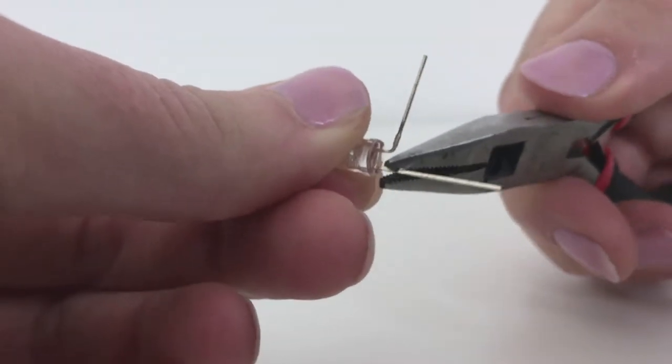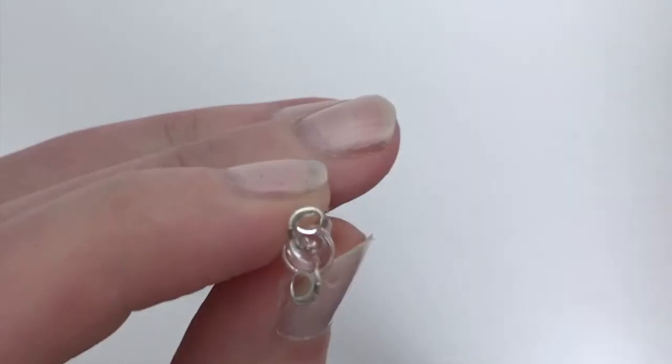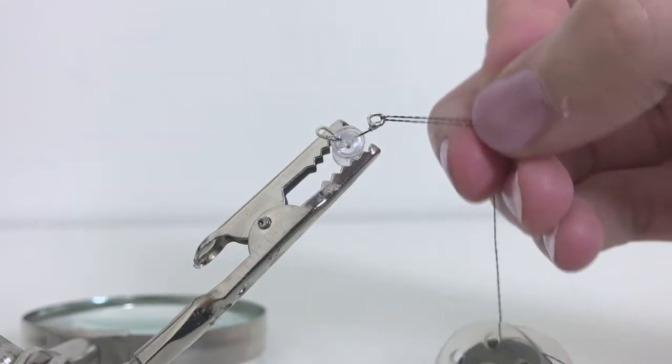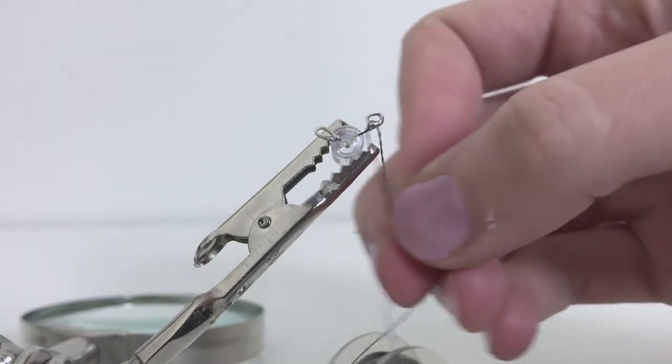Next, you're going to prep your LEDs to make them sewable. I have a tutorial on how to do this here. Essentially you'll be bending the pins and rolling them into spirals to allow them to be threaded. Do this with all three LEDs.